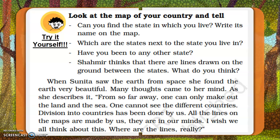When we talk about the map of our country, instead of purchasing a map, you can try Google Maps — it's there on every phone. We would require first the map of Maharashtra, and for more precise detail, the map of Vasai-Virar. All state borders are imaginary lines drawn on the ground. Between countries, we have borders, and if we wish to travel we need certain documents. When Sunita Williams saw the earth from space, she found it beautiful — one can only make out land and sea, not the different countries.